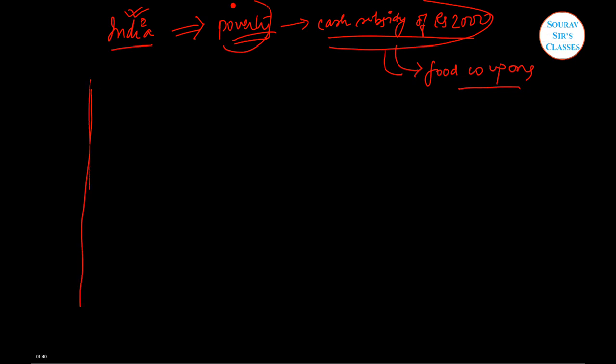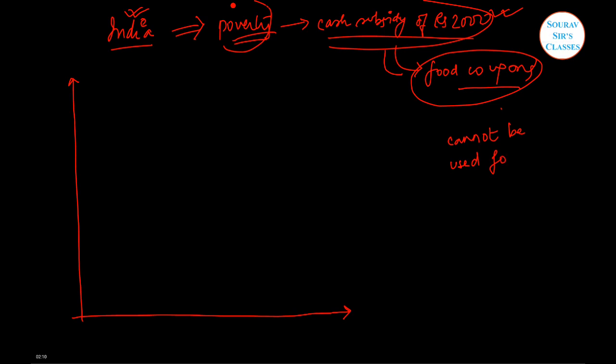Now what will happen to the budget line? First let us draw the initial budget line. Let us consider the two axes. This cash subsidy will get you some food coupon, and this can only be used to buy food. You cannot use it for any other purpose. On the horizontal axis I'll be measuring food, and on the vertical axis I'll measure all other commodities, which can include money even.